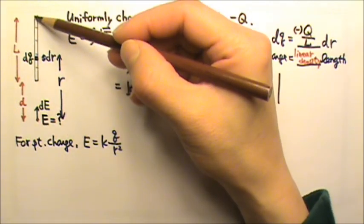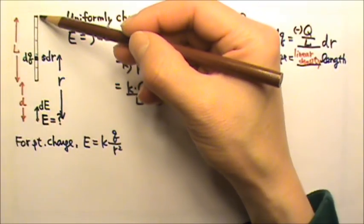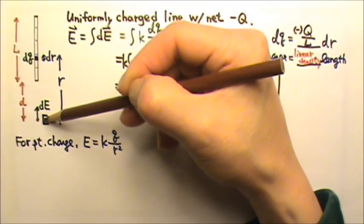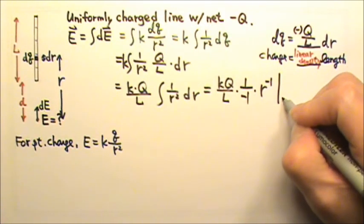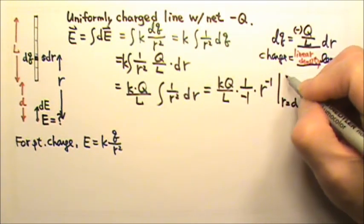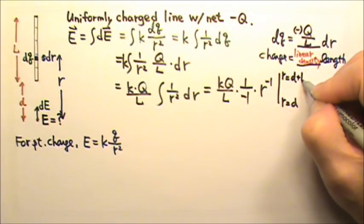The dQ at this end would have an r that is L plus d. So we would have to do the integral from r equals d all the way to r equals d plus L.